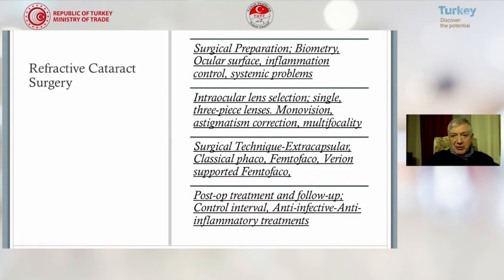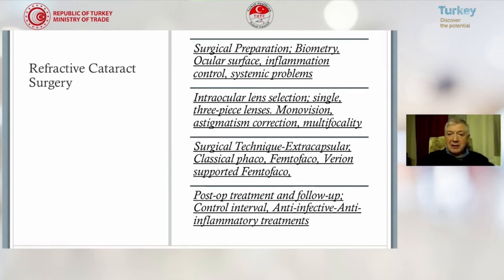Refractive cataract surgery has certain steps. You have to prepare the patient with biometry, ocular surface evaluation, inflammation control, and checking for systemic problems such as prostate issues, diabetes, and hypertension. Intraocular lens selection is variable — you can choose between single-piece to three-piece lenses, monovision to multifocality. Surgical technique depends on extracapsular surgery and mainly extracapsular cataract phacoemulsification depending on the patient's eye.